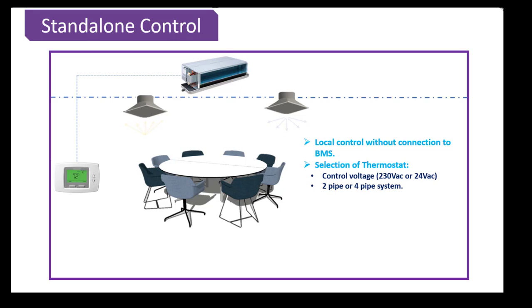A two pipe system is a heating only or a cooling only system while a four pipe system is a both heating and cooling system. So you shall keep in mind this thing while selecting a thermostat because there are different thermostats for two pipes and four pipe systems. Another very important parameter is what type of control is required for your cooling and heating valve actuators. Is it a two position floating or modulating control?